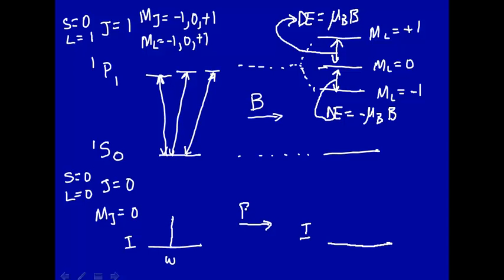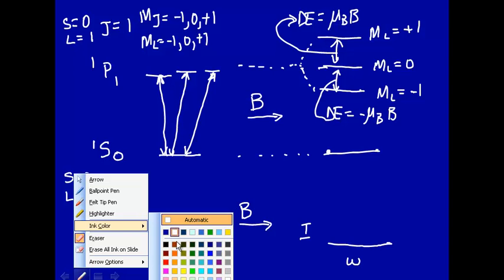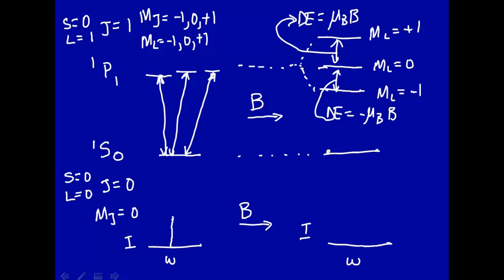This is with a magnetic field B, we'll have a transition from here to here. It goes up like this, there's one transition. Here's another transition, and here's a third transition. So we'll expect to find three peaks.